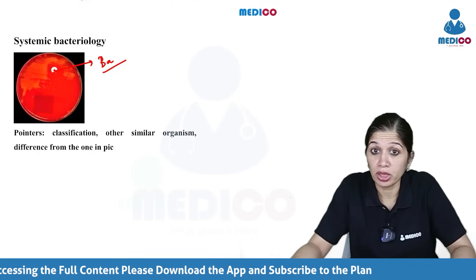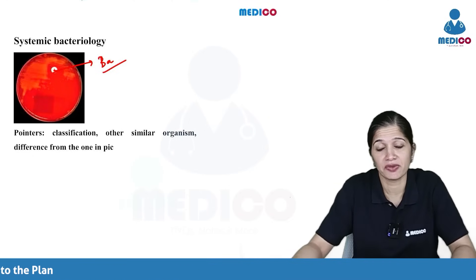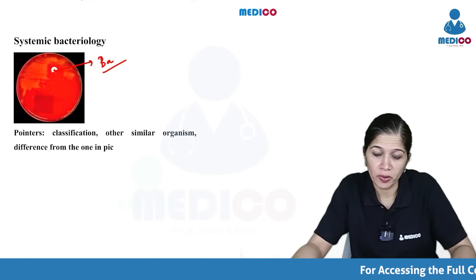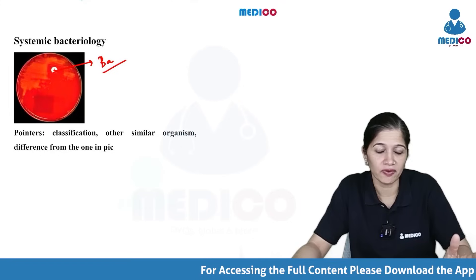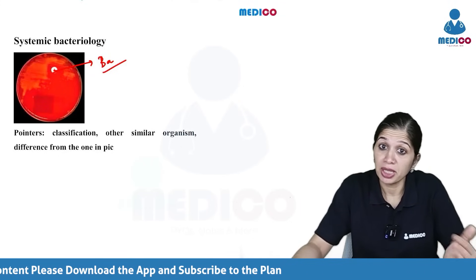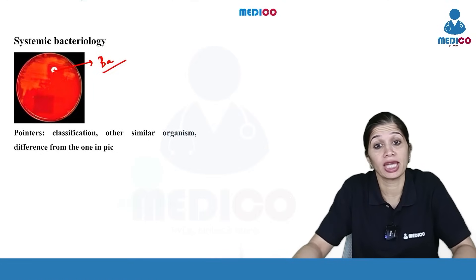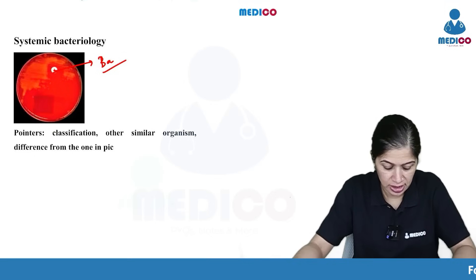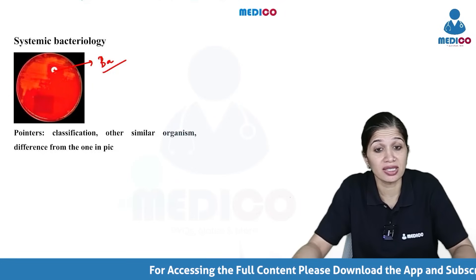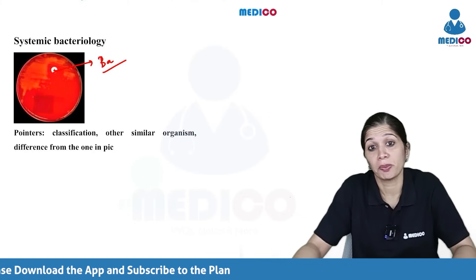You can make out the beta hemolysis here. In general, streptococci are classified based on oxygen requirement into aerobes and anaerobes — the anaerobic streptococci being the peptostreptococci. Among aerobic strep, they are classified into alpha, beta, and gamma streptococci. The beta hemolytic streptococci can be classified based on bacitracin sensitivity: the bacitracin-sensitive one is Strep pyogenes, and the bacitracin-resistant one is Strep agalactiae.